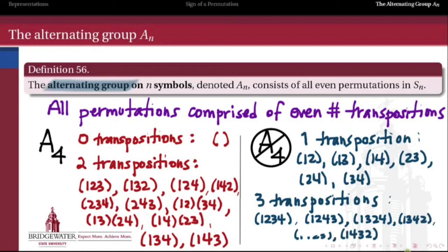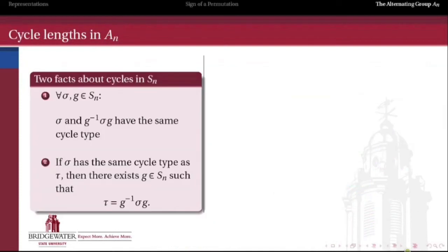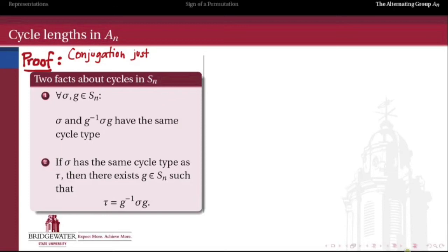The last thing to look at is properties of cycle lengths in the symmetric and alternating groups. The first fact is that if I take a permutation sigma and conjugate it by an element g — that is, compute g⁻¹ sigma g — then sigma and its conjugate always have the same cycle type. When we conjugate, we're really just rearranging the symbols we're permuting and then rearranging them back, so we've done the same thing to a renaming of the symbols.